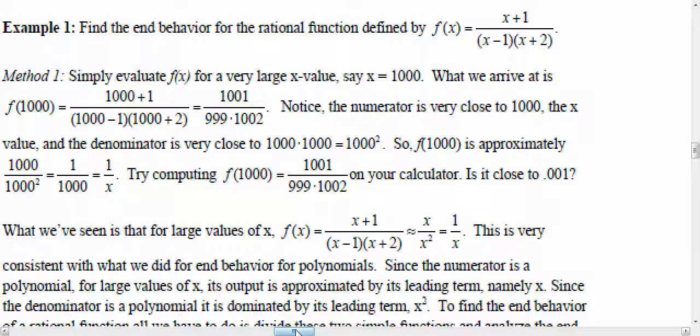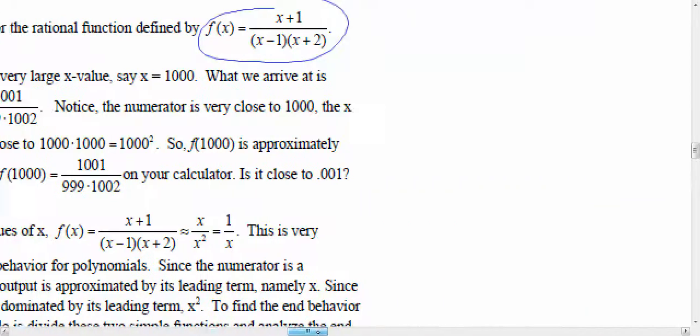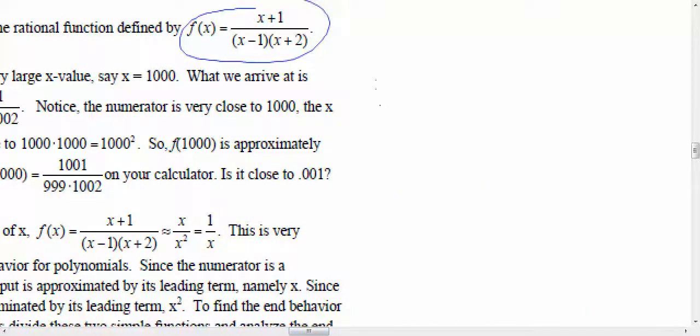We need to take a look at the end behavior of this rational function over here. Now, check this out. This rational function will have two asymptotes. One of the asymptotes is at x is equal to positive 1, so there's going to be a dotted line over at positive 1.